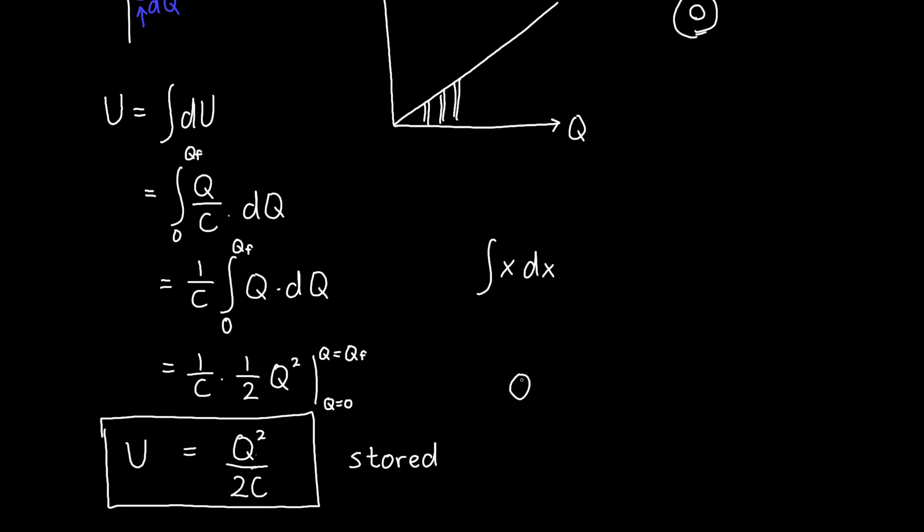We can also use our relationship between charge and voltage, so Q equals C times V, to get a different expression. So if we plug in Q, then we get U is equal to one half C times V squared. And this is a very common expression because very frequently we know the voltage across a capacitor and we know its capacitance. Sometimes we know the charge, sometimes we don't.